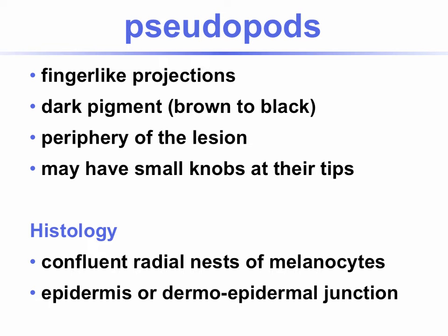Pseudopods are finger-like projections of dark pigment, usually brown to black in color, found at the periphery of a lesion. They might have small knobs at their tips. Histopathologically, they correspond to confluent radial nests of melanocytes in the epidermis or the dermoepidermal junction.